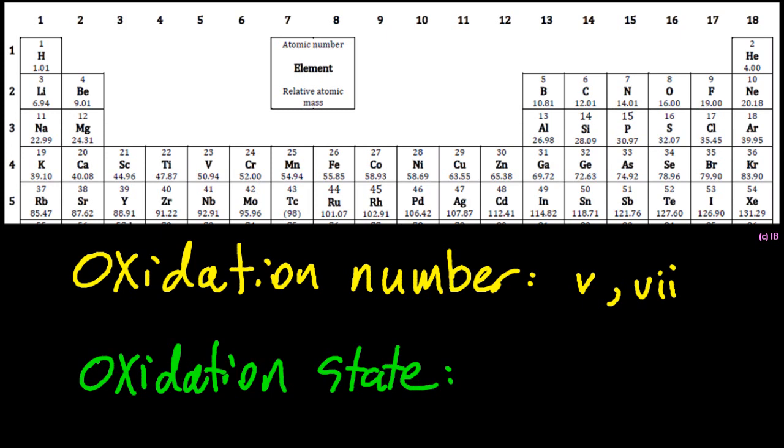For example, plus five, plus seven. And don't forget that you have to have the plus or the minus first. Or the IB won't give you the point.